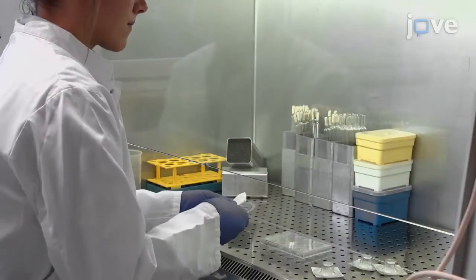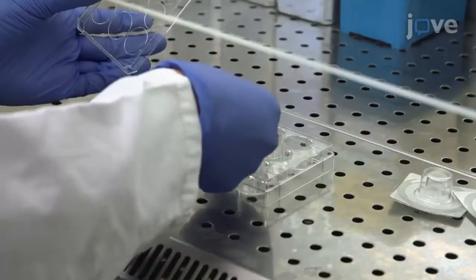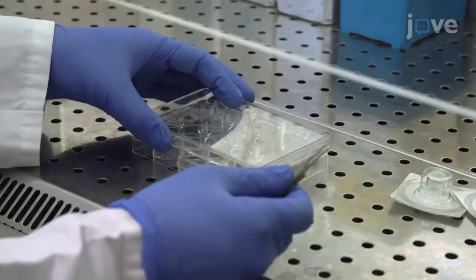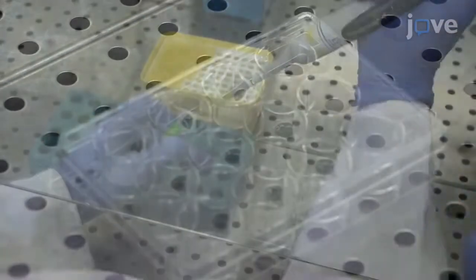Begin by assembling the 12-well plate in a biological safety cabinet. Unpack the plate and each insert, then use sterilized forceps to grab the inserts at their base and put them into the wells.